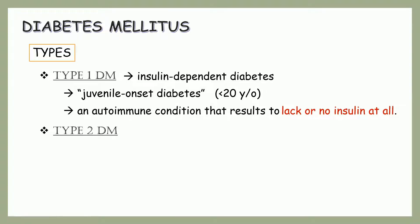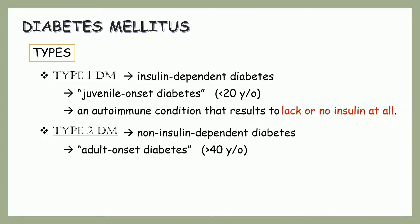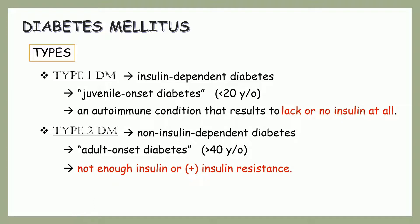Next is type 2 DM. It is non-insulin-dependent and also called adult-onset diabetes. It is the most common form of diabetes in people who are over 40 years of age, but can occur even in childhood if there are risk factors present. In this type, the beta cells in the pancreas produce insulin, but the problem is either it is not enough or the body doesn't use it as it should be. This is what we call insulin resistance.